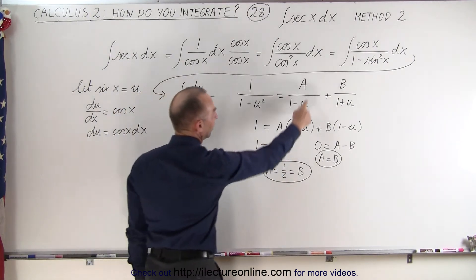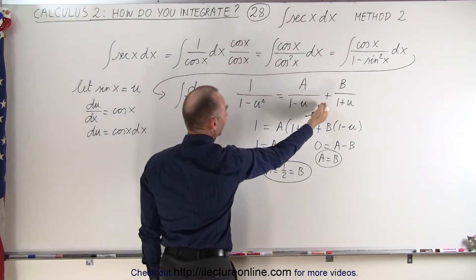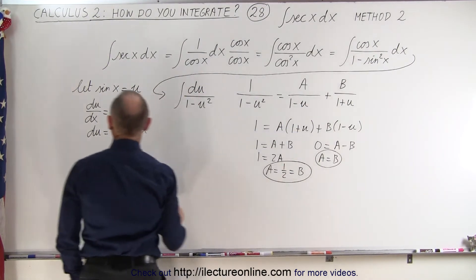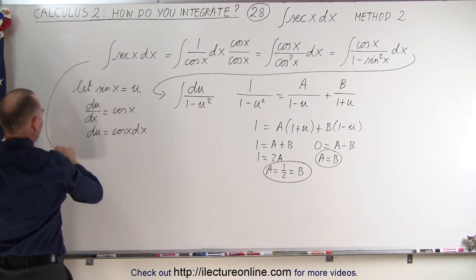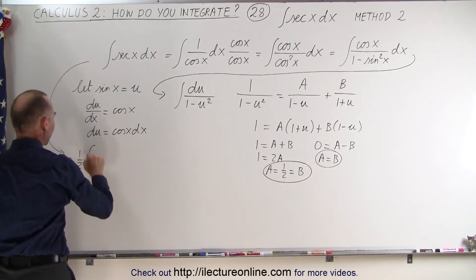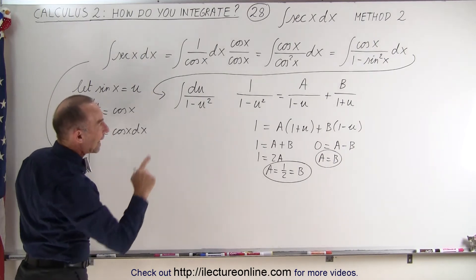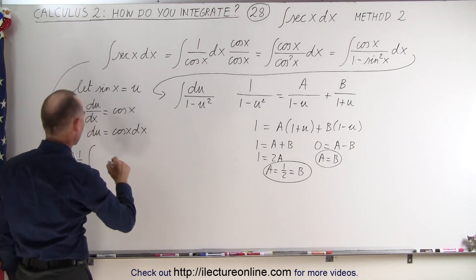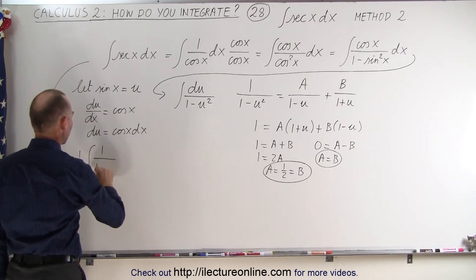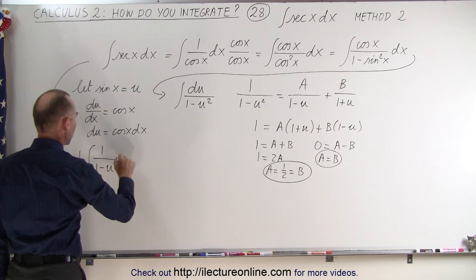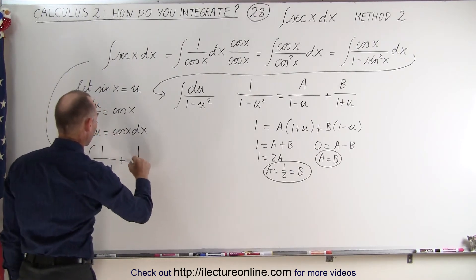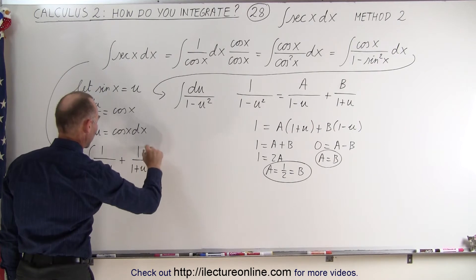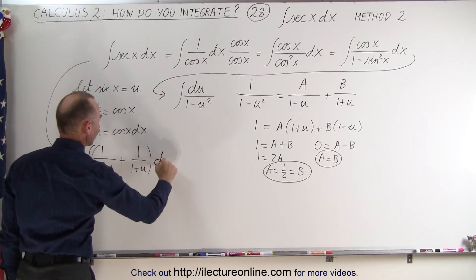This allows us to substitute for A and B in the fraction. We can pull out a 1/2, so the integral can now be written as 1/2 times the integral of 1 over 1 minus u plus 1 over 1 plus u, times du.